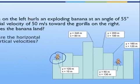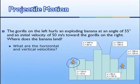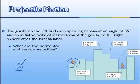To start off with, we should take the speed and angle that were given to us and break that into the initial velocity components. We've got a velocity of 50 at an angle of 55 degrees. The vertical velocity is the hypotenuse times the sine of the angle, and the horizontal velocity is the hypotenuse times the cosine of the angle.